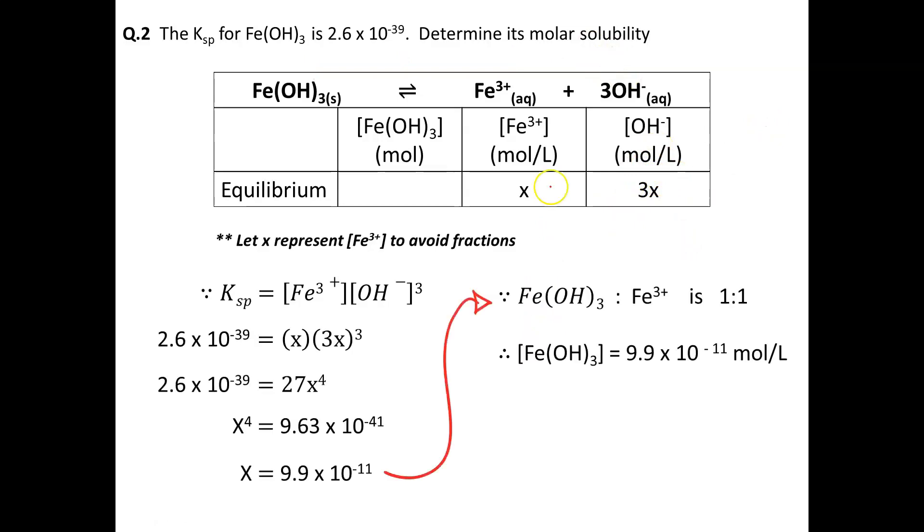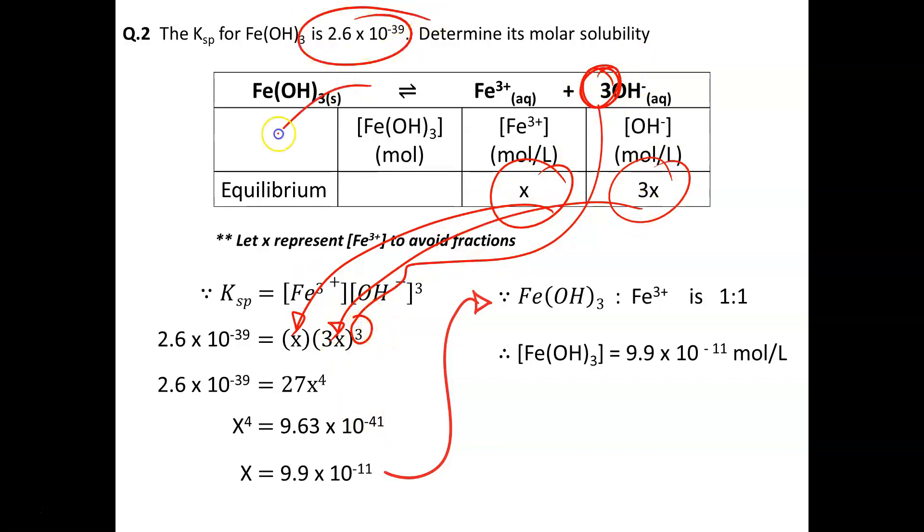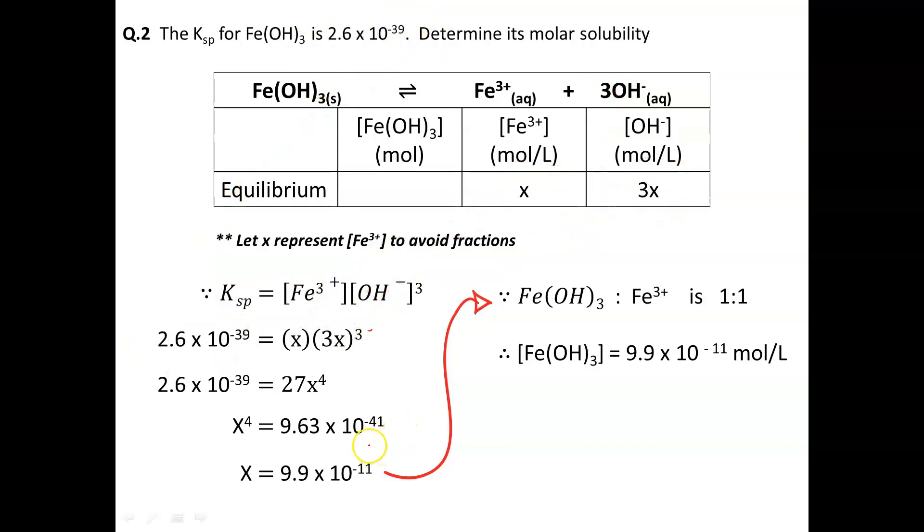We now substitute our values in: X for the iron concentration, 3X for the hydroxide concentration. Don't forget the coefficient of 3 gives it a cube, and then your Ksp value gets plugged in. From there we solve for X, and we get 9.9 times 10 to the power of negative 11 moles per liter, which represents the concentration of iron 3+. Since the iron 3+ concentration and the amount of iron(III) hydroxide that dissolves is a 1 to 1 ratio, the molar solubility is also 9.9 times 10⁻¹¹ moles per liter.